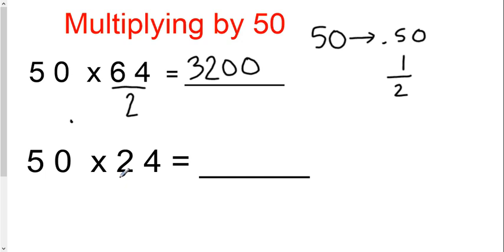Let's see it again. Take the non-50 number, divide it by 2. I get 12. Move the decimal twice or add two zeros, and I get 1,200.